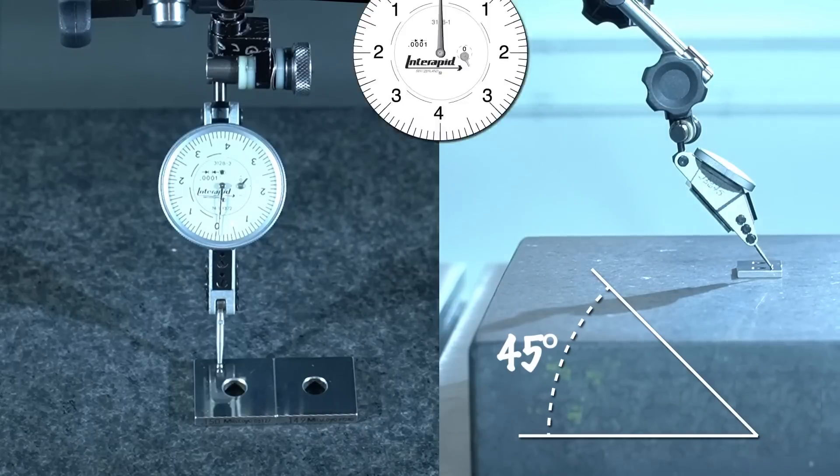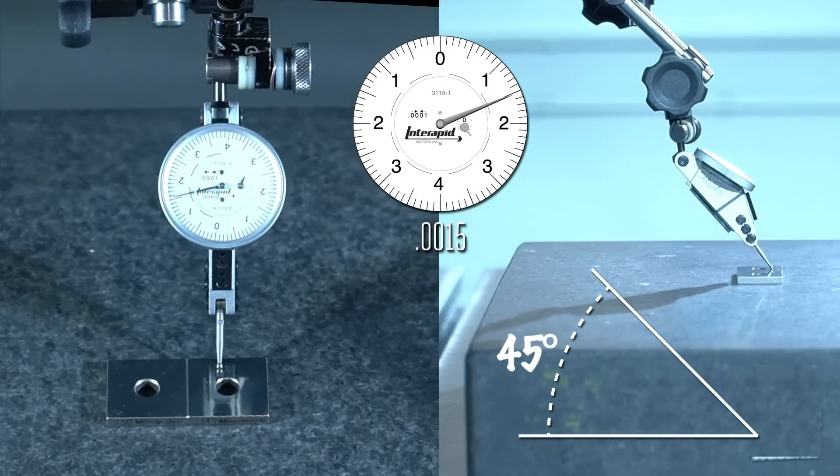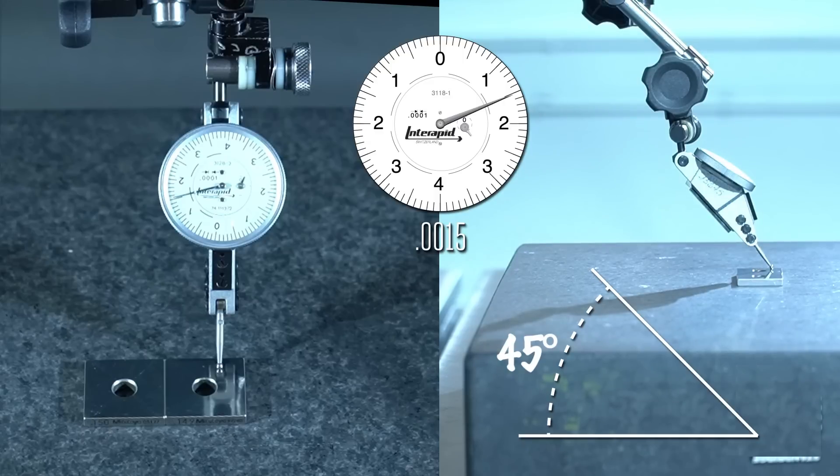So let's try the stylus at 45 degrees. Now the indicator reads one thou and five tenths. That's an error of 50%. In the world of accurate machining and machine tool building, an error of this size can result in parts getting scrapped or a machine getting built out of spec.